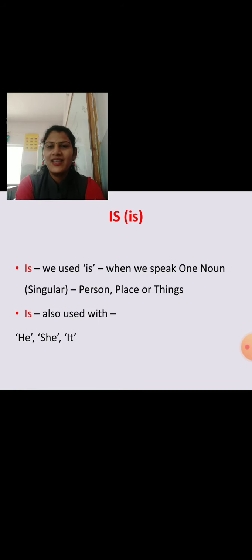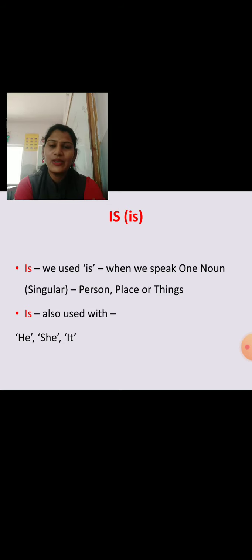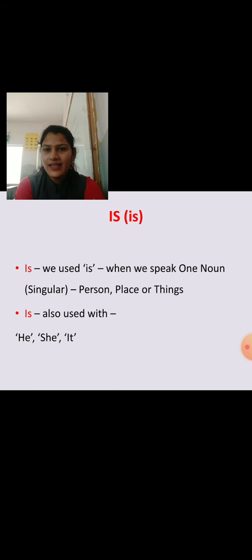First, Is. We use Is when we speak of one noun or singular noun — means person, place, or thing. Is is used for singular noun. Is is also used with he, she, it. For example, Gita is a single girl, so we use Is for her name. Gita is a good girl.